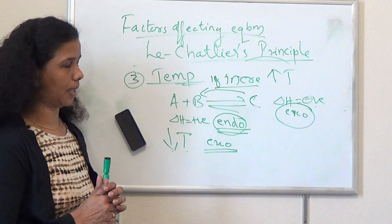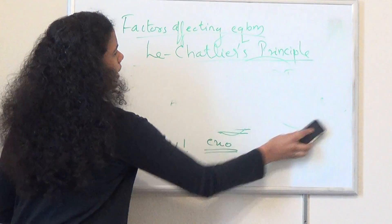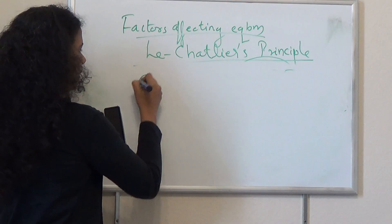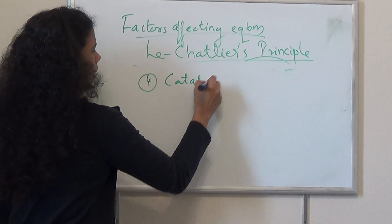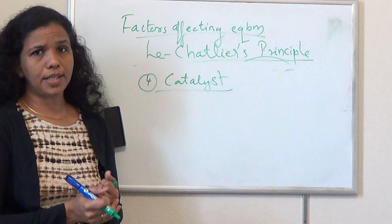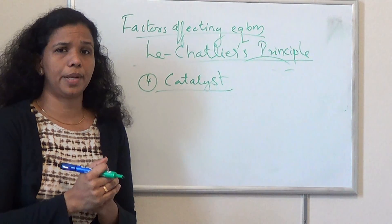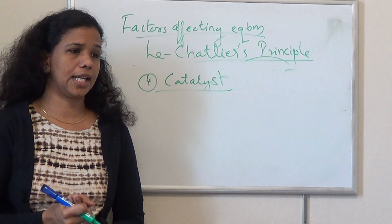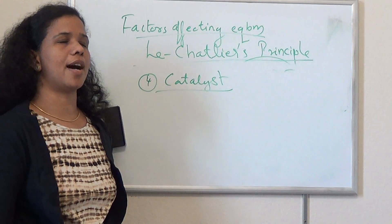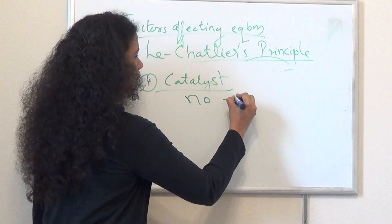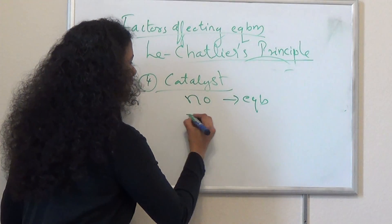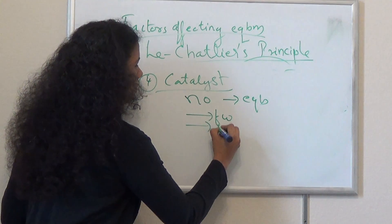Last but not least, we can consider the effect of addition of a catalyst. We know that a positive catalyst or promoter will always increase the rate of reaction. So for a reaction at equilibrium, if you add a catalyst, what is the effect? Actually, catalyst has no effect on the equilibrium position.